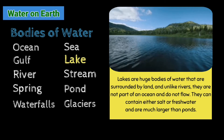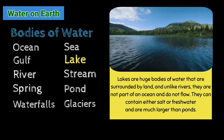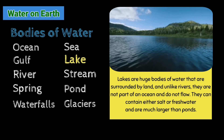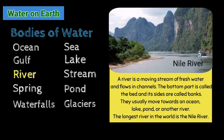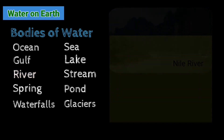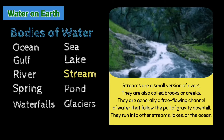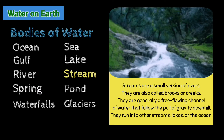Lakes are huge bodies of water that are surrounded by land. Unlike rivers, they are not part of an ocean and do not flow. They can contain either salt or fresh water and are much larger than ponds. A river is a moving stream of fresh water that flows in channels. The bottom part is called the bed and the sides are called banks. They usually move towards an ocean, lake, pond, or another river. The longest river in the world is the Nile River. Streams are a small version of rivers, also called brooks or creeks — free-flowing channels of water that follow the pull of gravity downhill. They run into other streams, lakes, or the ocean.